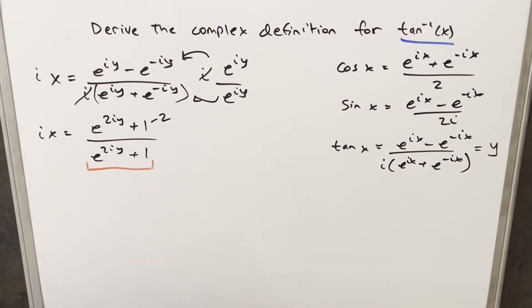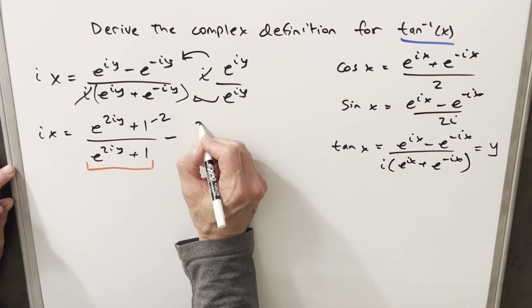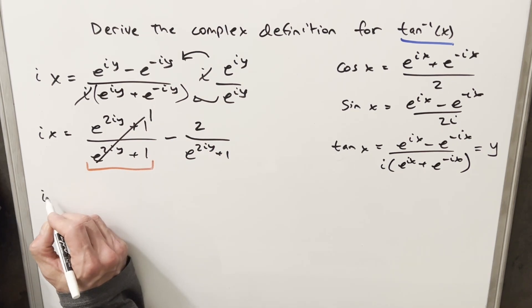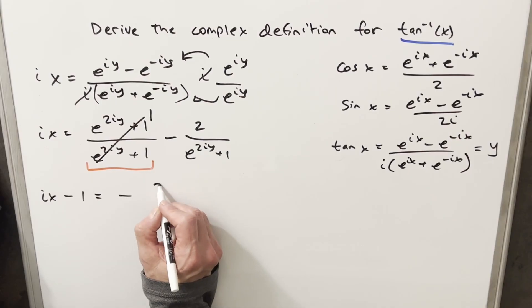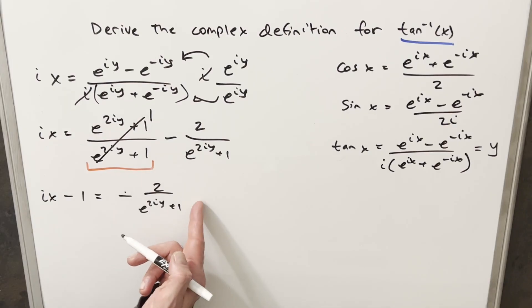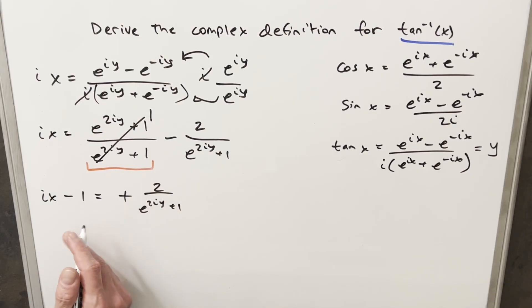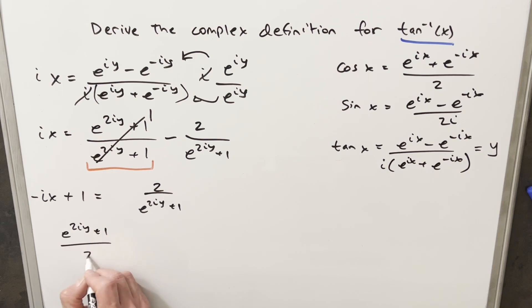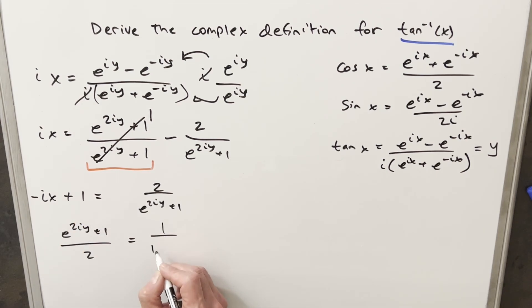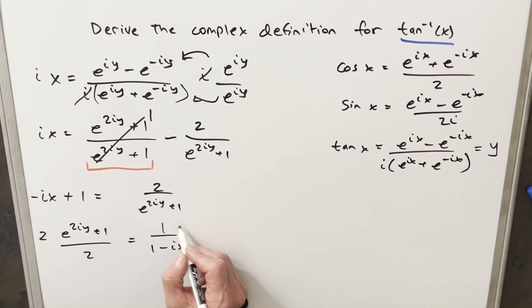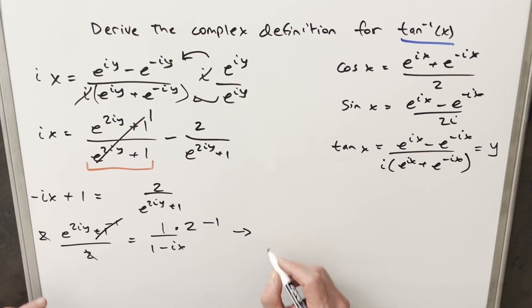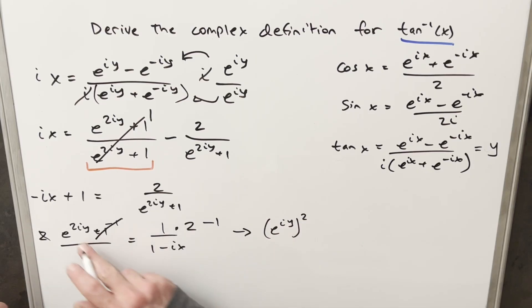I can take this minus 2 and separate it off into a separate term with the same denominator, and this remaining term is just 1. So if I subtract 1 from both sides, on the left side I'm going to have ix minus 1, and on the right we're just going to have minus 2 over e^(2iy) plus 1. Now with this minus sign, I'm going to multiply by minus 1 on both sides — that turns things to a plus on one side and reverses the sign on the left. Taking the reciprocal on both sides and reordering, this becomes (e^(2iy) plus 1) over 2, equal to 1 over (1 minus ix). Multiplying by 2 on both sides and subtracting 1, on the left we have e^(2iy), which I'll rewrite as (e^(iy))^2.